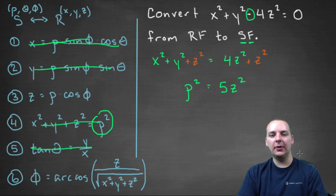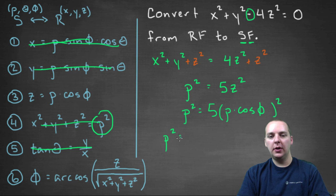So let's take that z out. So we'll have ρ² = instead of 5z², we'll take that z and replace it with ρ cos φ. And then I think we can square the ρ and square the cosine. So we'll get ρ² = 5ρ² cos² φ.